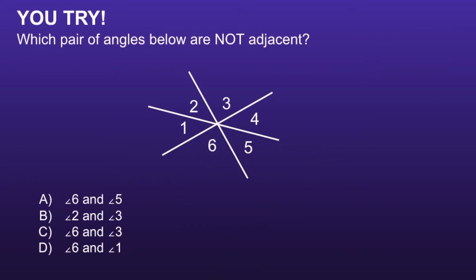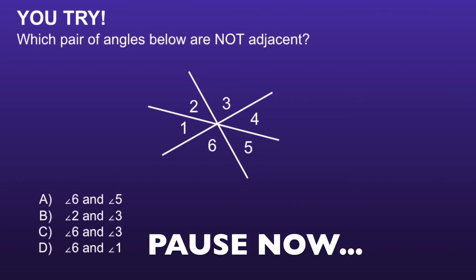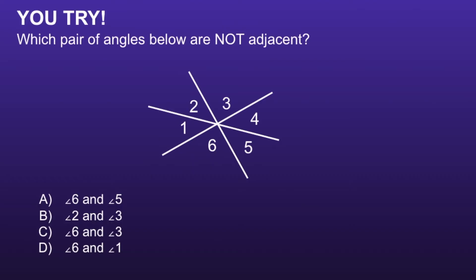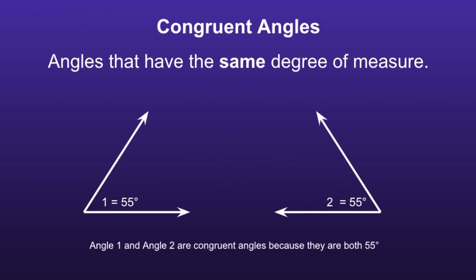Which pair of angles below are not adjacent angles? I would recommend you pause the video now and resume when you're ready. Out of these angle pairs, angles 6 and angle 3 are not going to be adjacent angles because they do not share a common side.